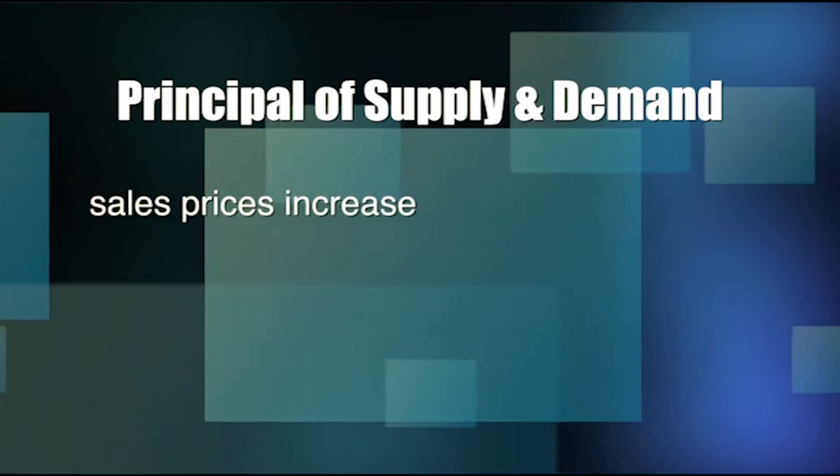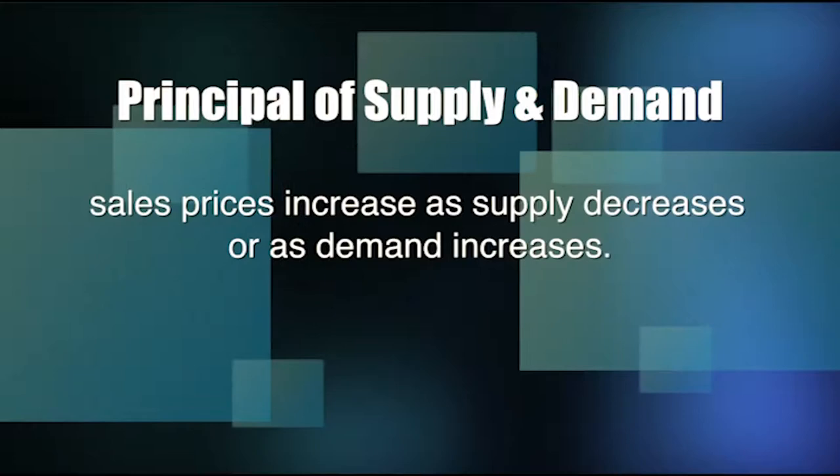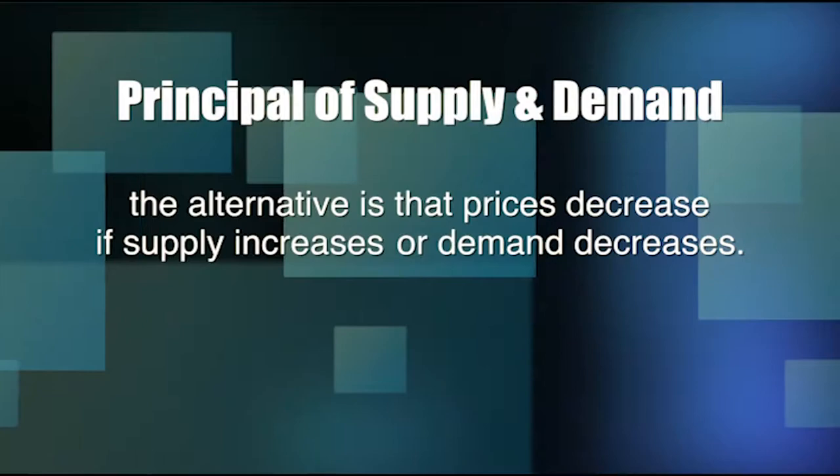The principle of supply and demand states that sales prices increase as supply decreases or demand increases — too few properties for too many buyers. Prices decrease if supply increases or demand decreases. If five buyers want to purchase one particular commercial property, they're likely to bid the price up, leading to a reduction or compression in cap rates. However, if there's only one buyer for a property type and five are for sale, there's downward pressure on price as sellers compete for that one buyer.